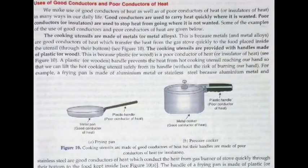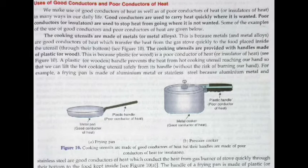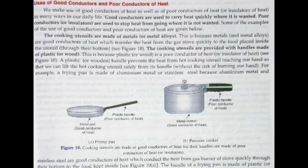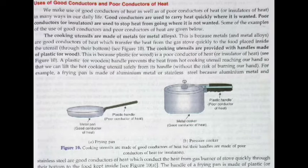Where do we use good conductors and poor conductors? Cooking utensils like pans and cookers are made of metal because metal is a good conductor of heat — it heats up easily and cooks food quickly. But their handles are made of plastic because plastic is a poor conductor of heat and does not get hot, making it comfortable to hold.